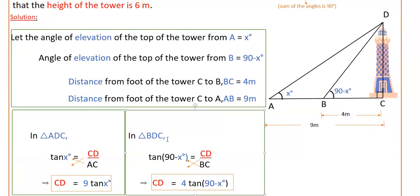So in this triangle tan x is equal to opposite side by adjacent side, so CD by AC. So CD is equal to, here AC is 9 meters, so 9 into tan x degrees.